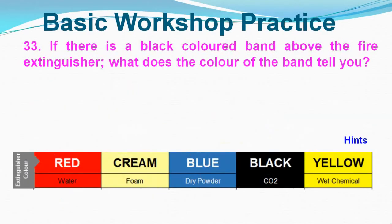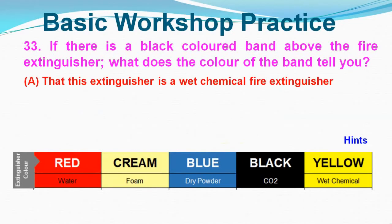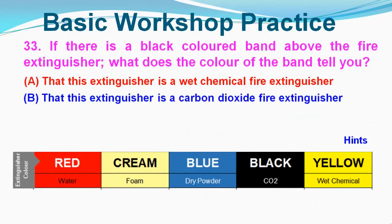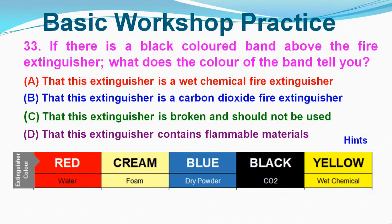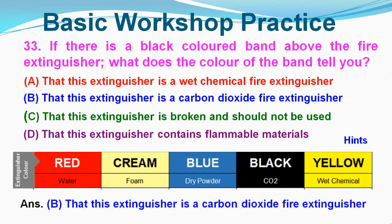Question No. 33: If there is a black colored band above the fire extinguisher, what does the color of the band tell you? Option A: That this extinguisher is a wet chemical fire extinguisher, Option B: That this extinguisher is a carbon dioxide fire extinguisher. Correct answer is Option B, Carbon Dioxide fire extinguisher.